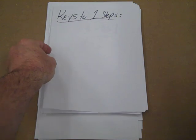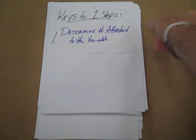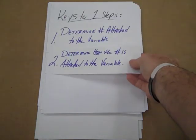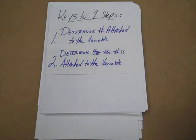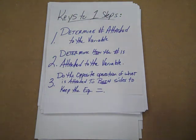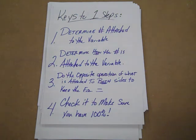Some keys to one-step equations: one, determine the number attached to the variable. Two, determine how it's attached. Three, do the opposite operation to both sides of the equal sign to keep it equal. And then finally check it out. If you do that, you get 100%.